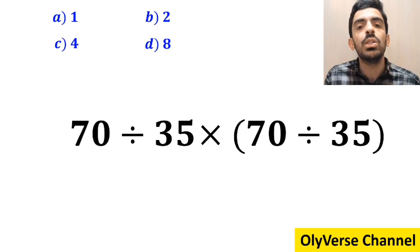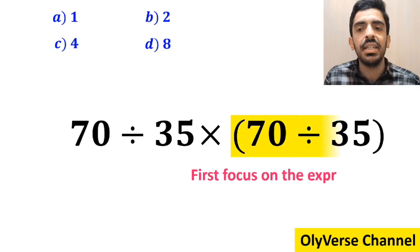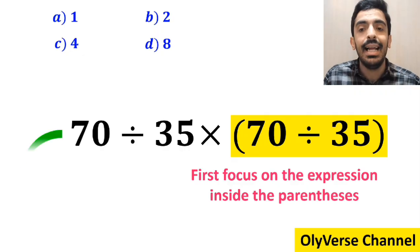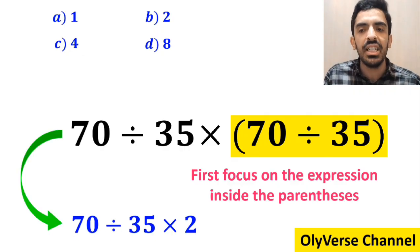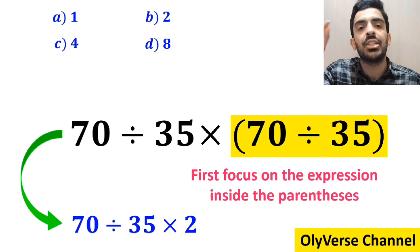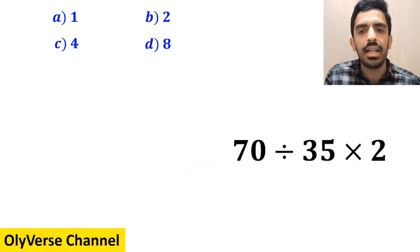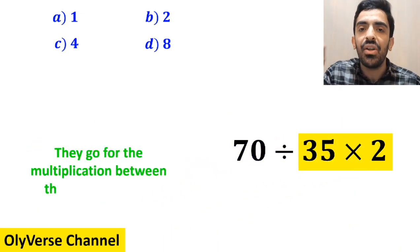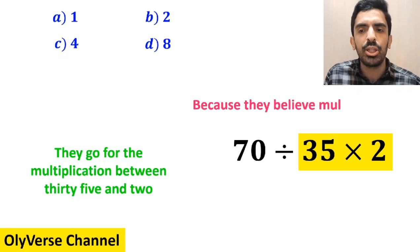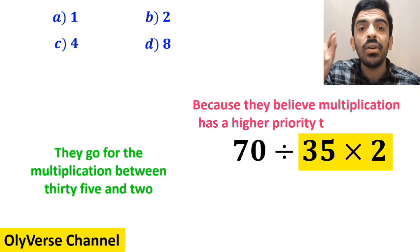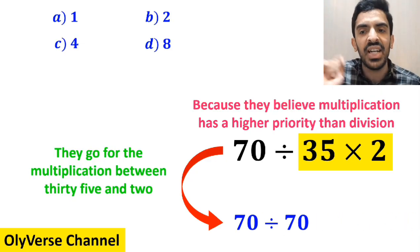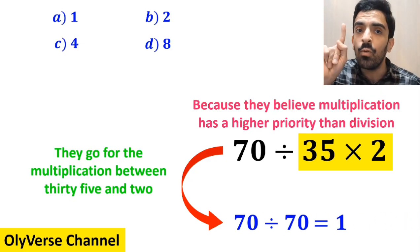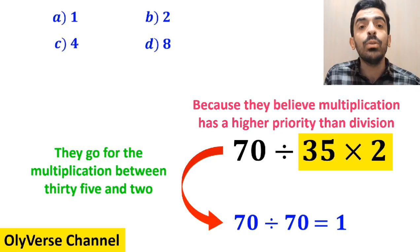Many people, when starting to solve this question, first focus on the expression inside the parenthesis, and instead of considering the whole expression, they rewrite it as 70 divided by 35 multiplied by 2. In the next step, they go for the multiplication between 35 and 2 because they believe multiplication has a higher priority than division, so they simplify this expression and rewrite it as 70 divided by 70.